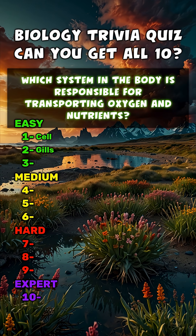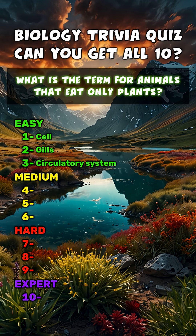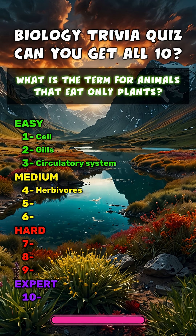Which system in the body is responsible for transporting oxygen and nutrients? Circulatory system. What is the term for animals that eat only plants? Herbivores.